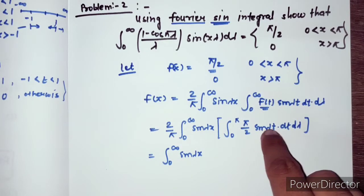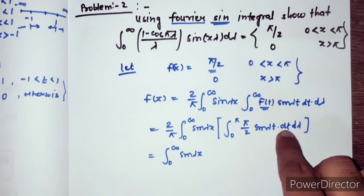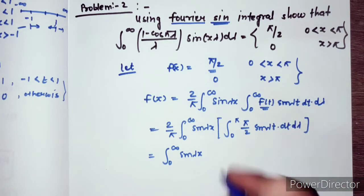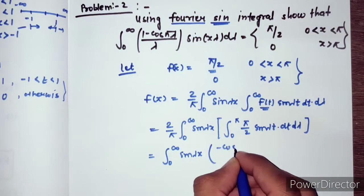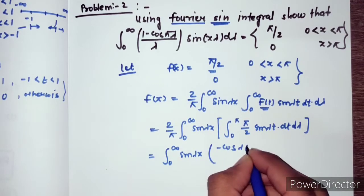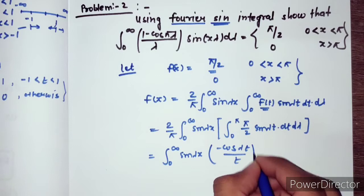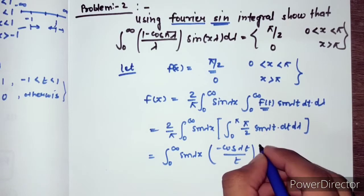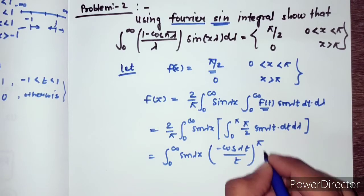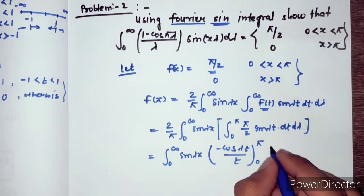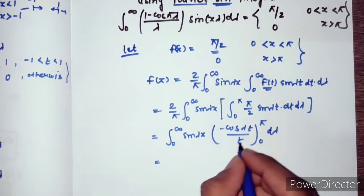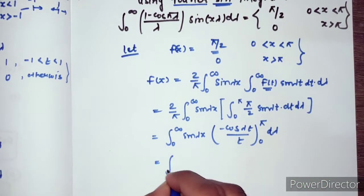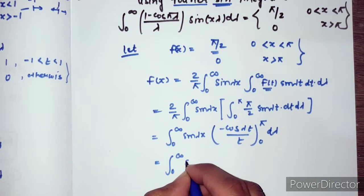We integrate sin(λt) dt, which gives minus cos(λt) upon λ, evaluated from t = 0 to t = π, times dλ.